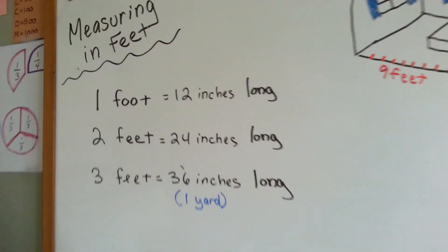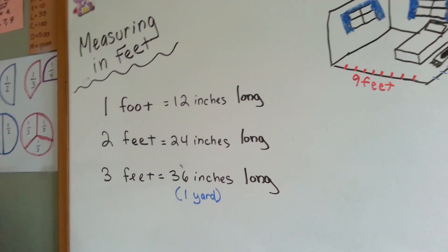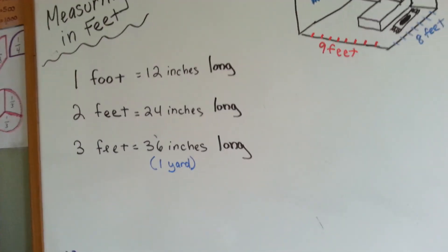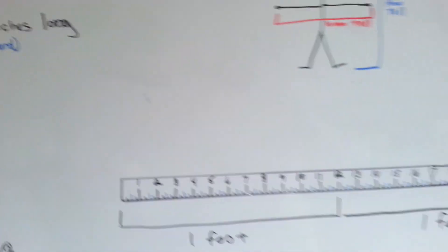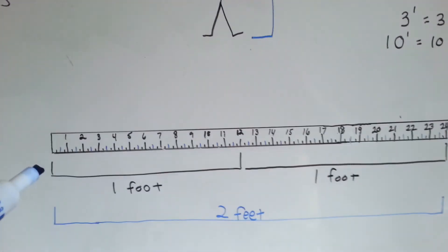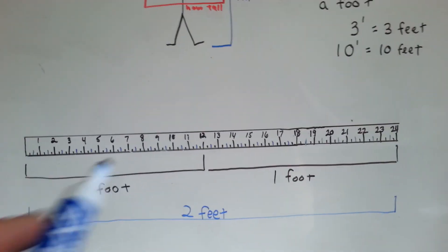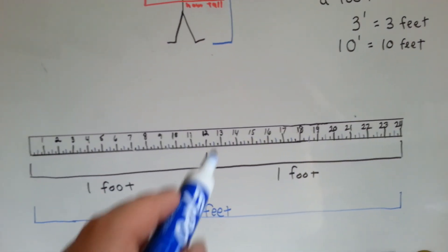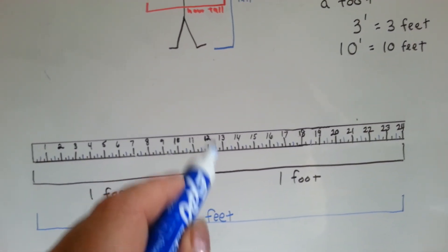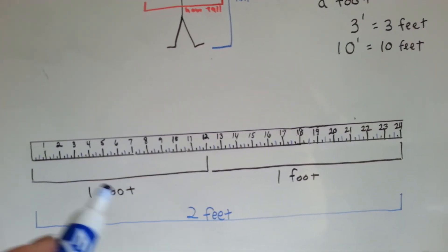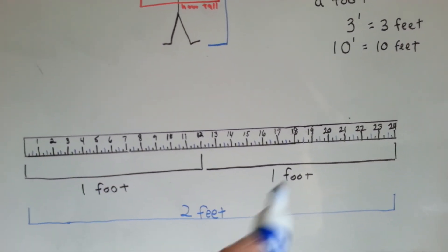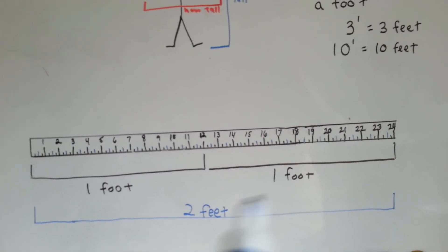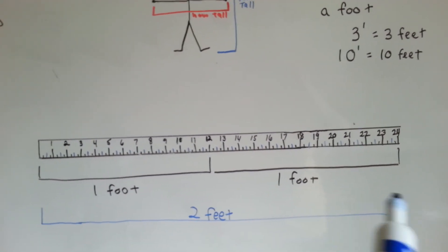So what are feet? Feet are groups of 12 inches. Here's 24 inches, and here's the 12-inch mark. That's one foot long, that's one foot long, and together that's two feet long.